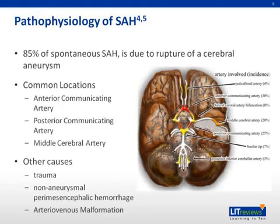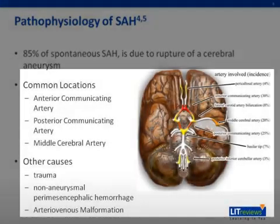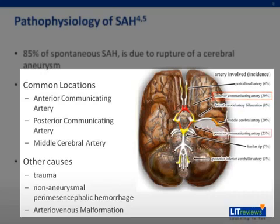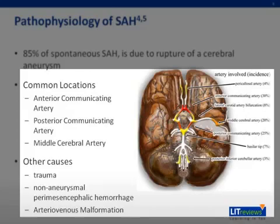Pathophysiology of subarachnoid hemorrhage. In 85% of cases of spontaneous subarachnoid hemorrhage, the cause is rupture of a cerebral aneurysm. Aneurysms are most common around the circle of Willis, along the anterior communicating artery, which accounts for 30% of aneurysmal SAH, along the posterior communicating artery, which accounts for 25% of aneurysmal SAH, and along the middle cerebral artery, which accounts for 20% of aneurysmal SAH. Aneurysms tend to form at arterial branch points or bifurcations. 85% of aneurysms arise from the anterior circulation, while the remaining 15% occur in the posterior circulation.